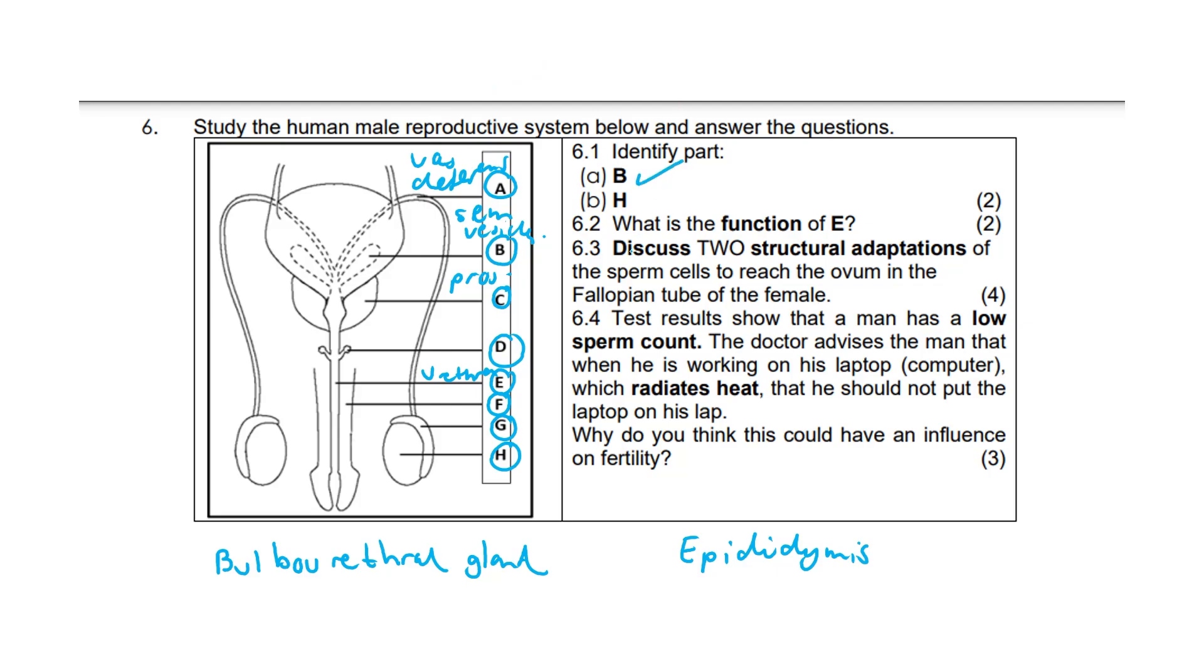The answer to B - the seminal vesicles. H is the testes. The function of E is to transport semen with sperm cells or transport urine. E was the urethra. 6.3: Discuss two structural adaptations of the sperm cells to reach the ovum in the fallopian tube of the female. The tail is used to swim, and the mitochondria in the midpiece is for energy to swim.